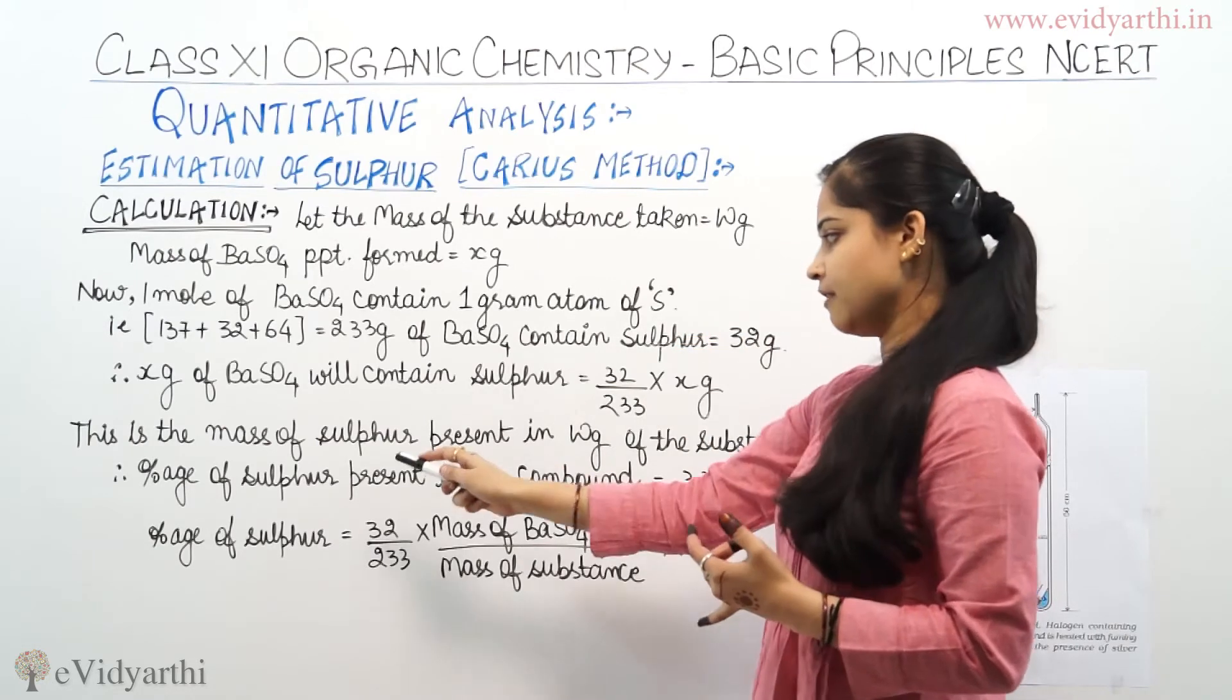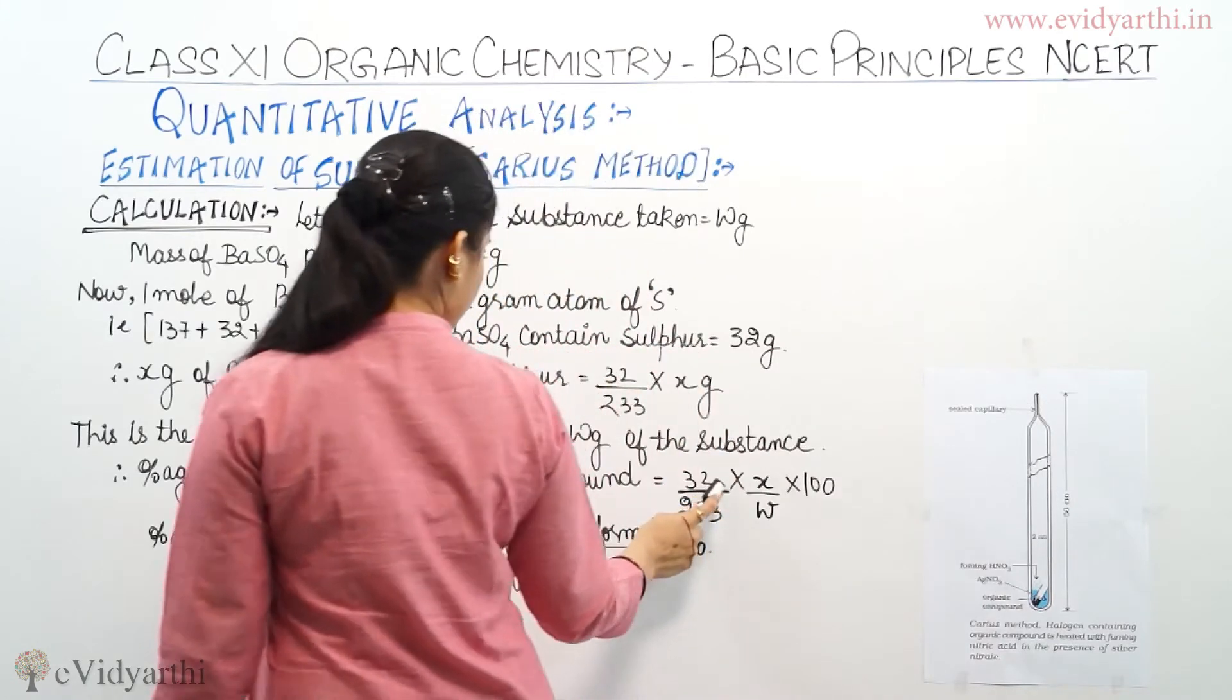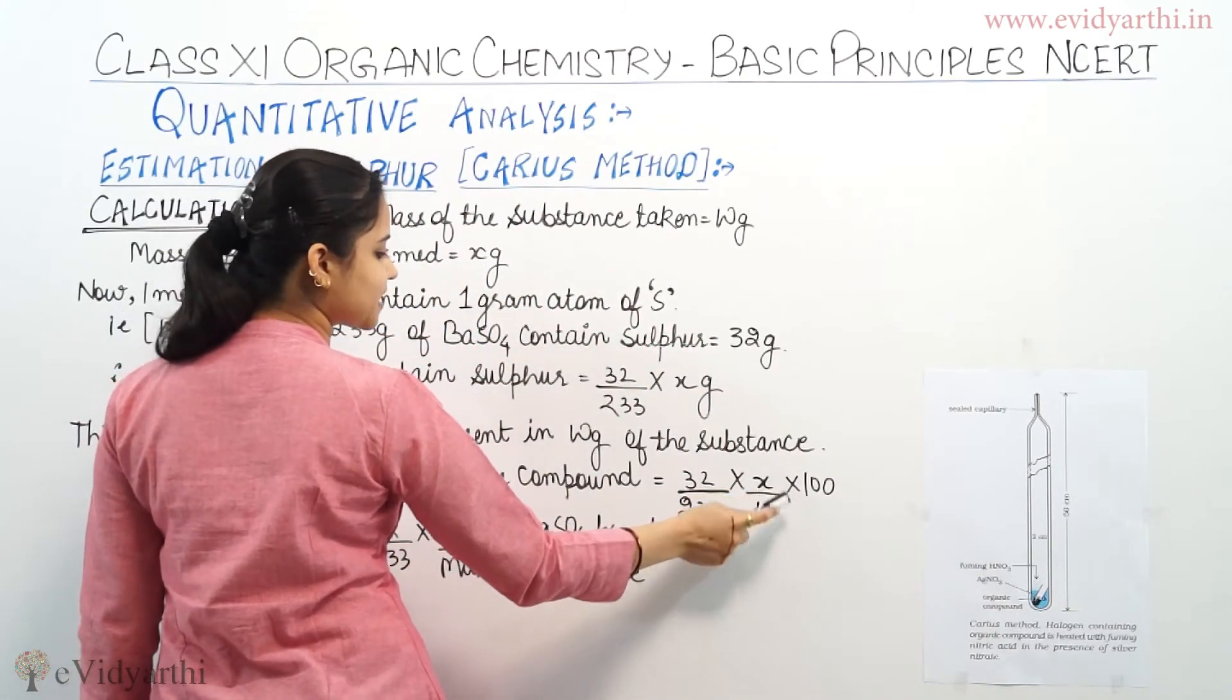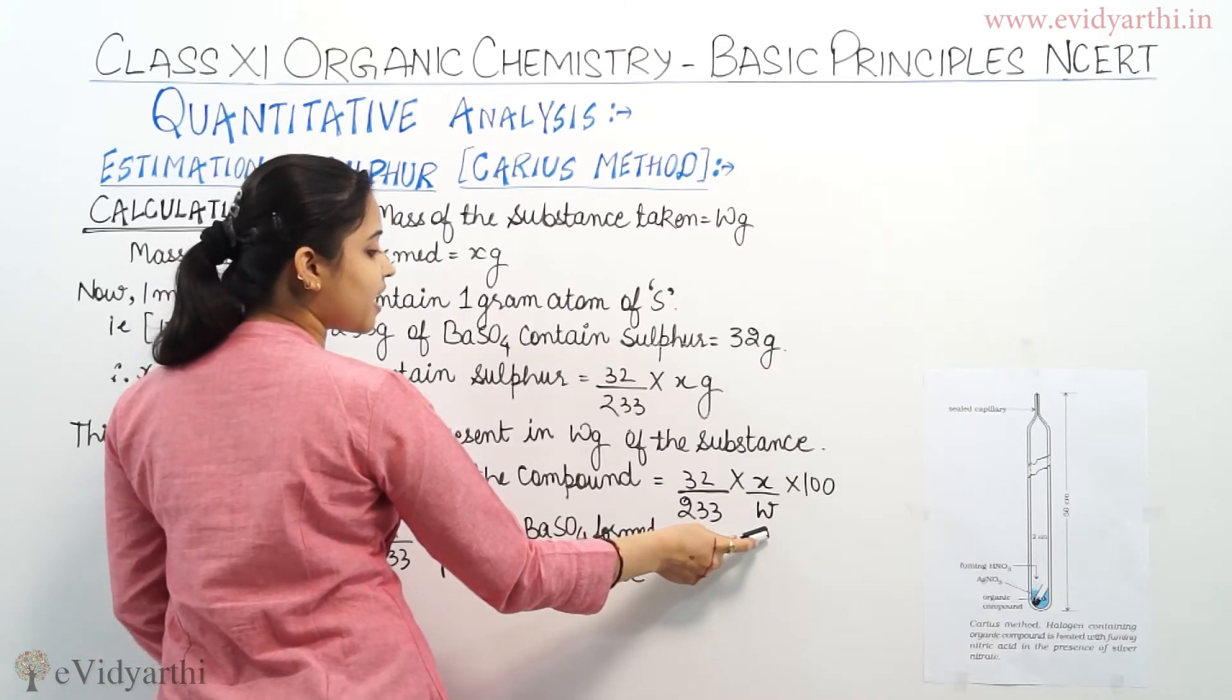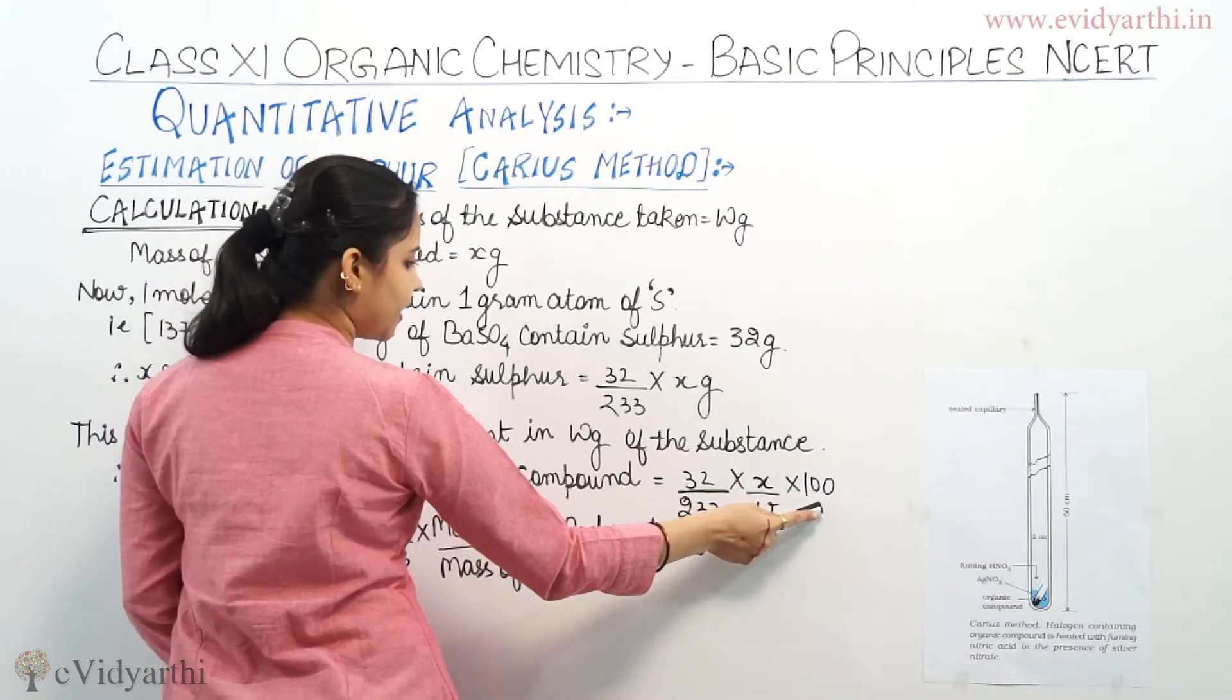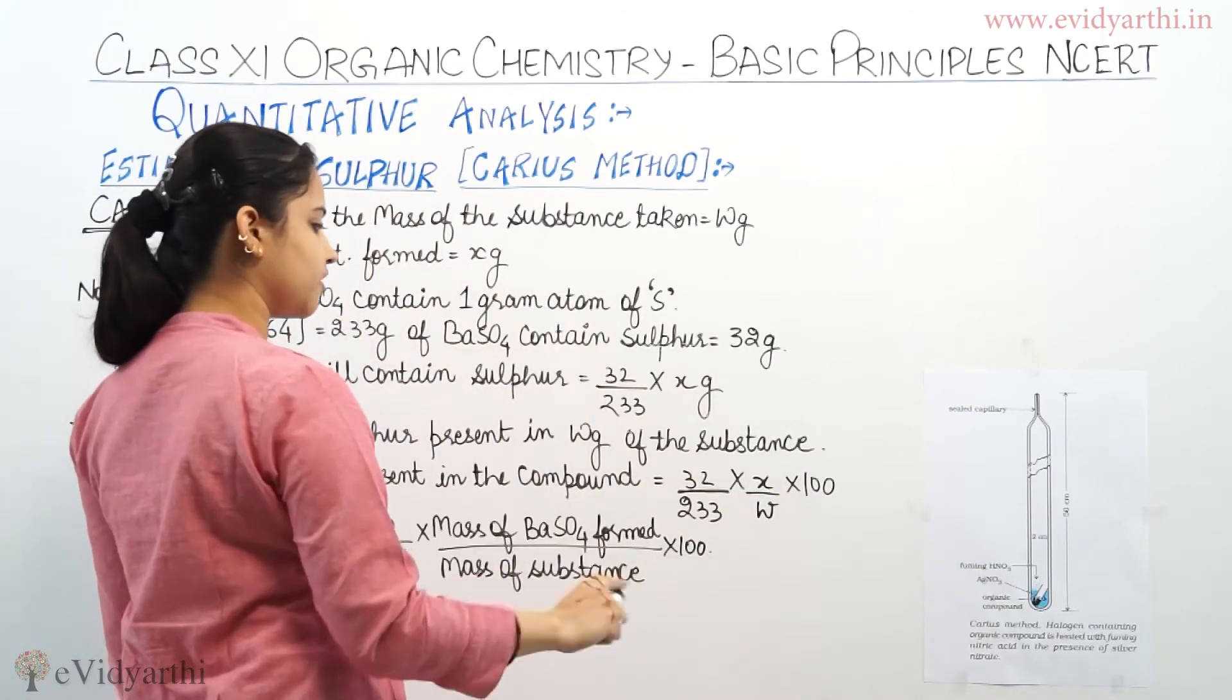Now, percentage of sulfur present in the compound: 32 divided by 233 times x divided by W. What is W? The amount of organic substance which we have taken, times 100. So this is the percentage of sulfur in the given organic compound.